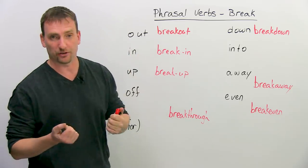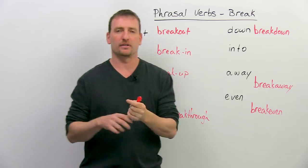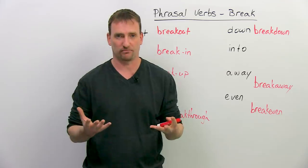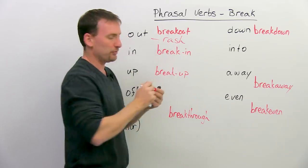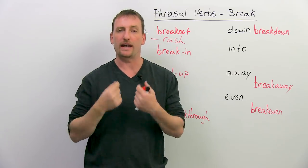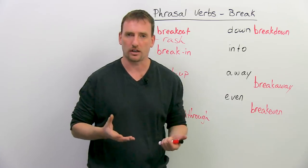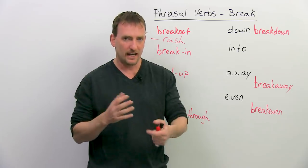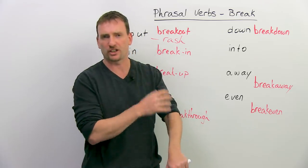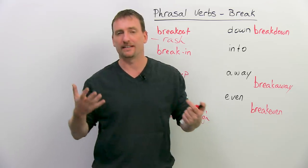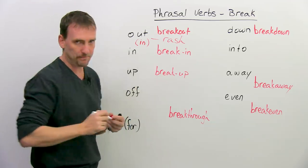We're going to start with 'break out.' Break out has a few meanings, and we have the noun 'breakout.' The first meaning: if you break out in a rash — R-A-S-H — it basically means you ate something that you're allergic to. So some people are allergic to chocolate; they eat a piece by accident and suddenly on their skin they see little red dots everywhere. That is called a rash. It's itchy, it's not very pretty, but it's an allergic reaction.